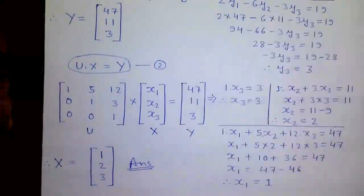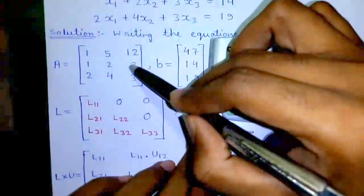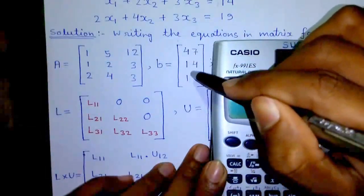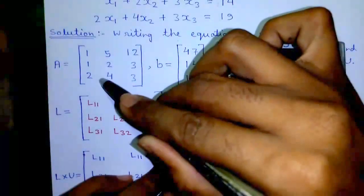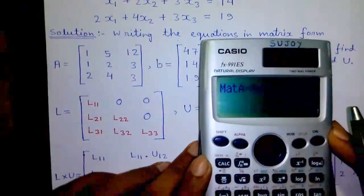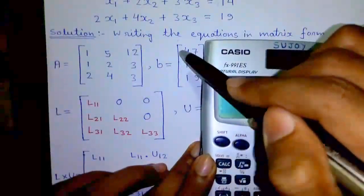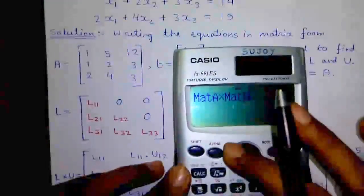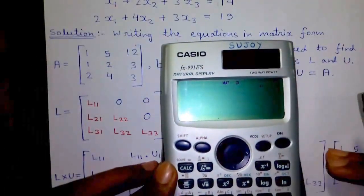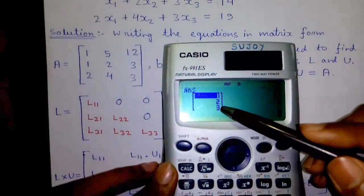Calculator trick number 4: if you have matrix A and matrix B, you can directly find the solution matrix X using the formula matrix A inverse into matrix B equals matrix X. Matrix A inverse into matrix B equals 1, 2, and 3 — our solution matrix.